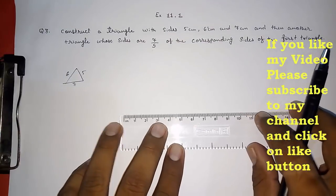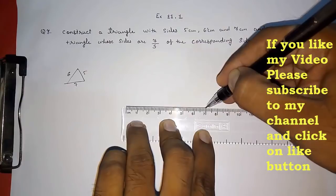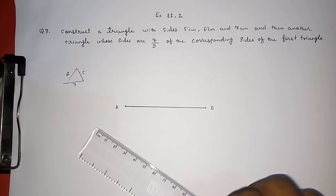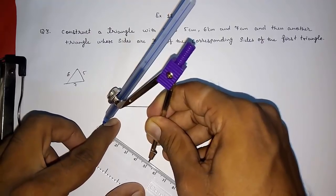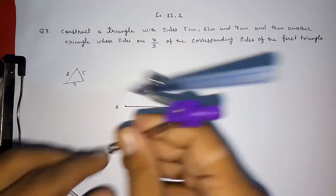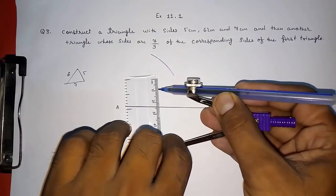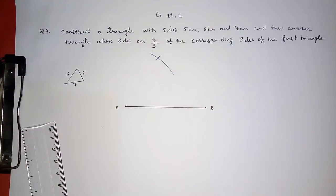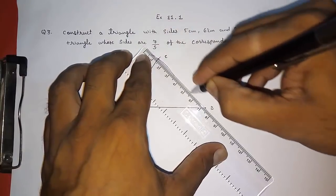Now starting our construction. First we draw a line of 7 centimeters and name it AB. The remaining sides are 5 and 6 centimeters. We take an arc of 5 centimeters from one end and 6 centimeters from the other end. The intersecting point will be point C. This is our given triangle ABC with sides five, six, and seven.